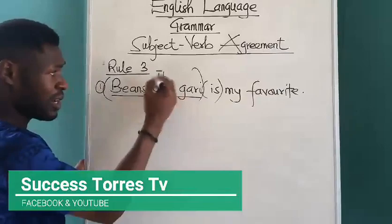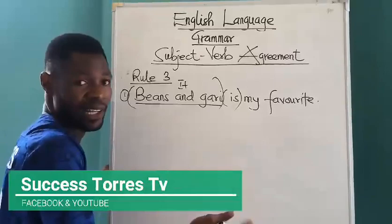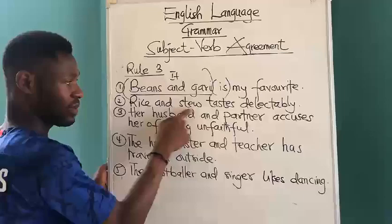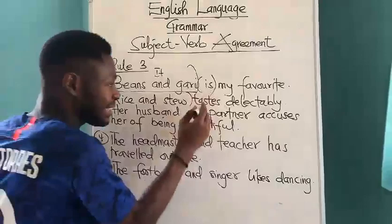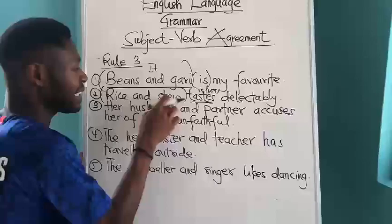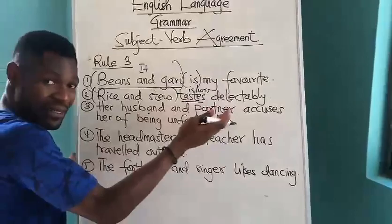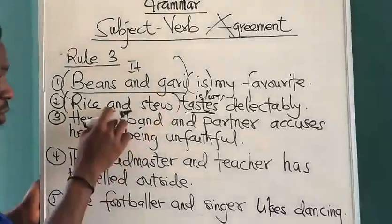Even though joined by 'and', it is a compound subject in form, but in meaning it is singular. More examples: 'rice and stew tastes delectably.' Rice and stew — you know that the two are one diet. So it takes a singular verb — 'was' or 'is'. 'Rice and stew was served at a birthday party.' 'Rice and stew were served.' Peas and carrots, ham and eggs — all these are one thing, even though joined by 'and'.